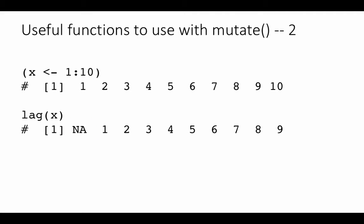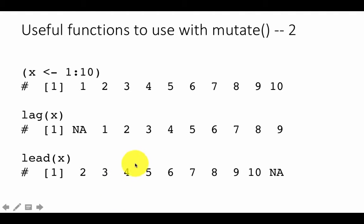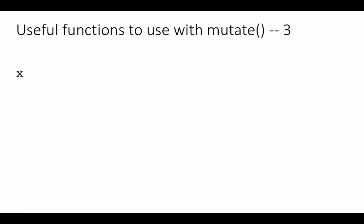Similarly, there is another option called lead(x), which gives you not the previous value but the next value. So in position 1 you get the value that is actually in position 2 of the original, and so on — you get 2, 3, 4, 5, 6, 7, 8, 9, 10, and then NA at the end. This is pointed out in case you happen to analyze time series data; in this course we may not use lead and lag very much, but it is good to have in your armory.